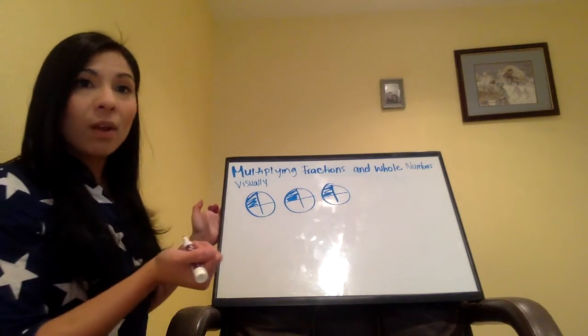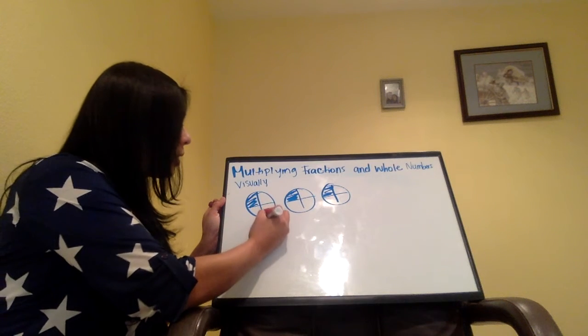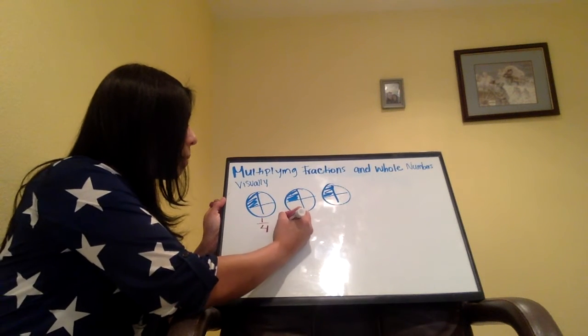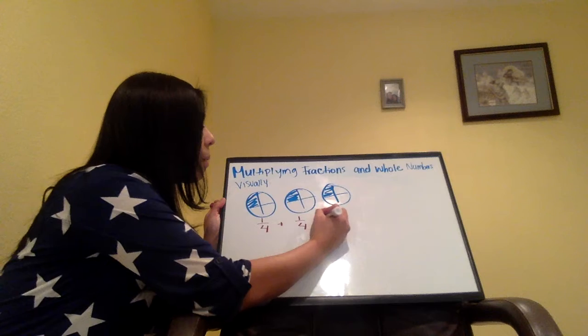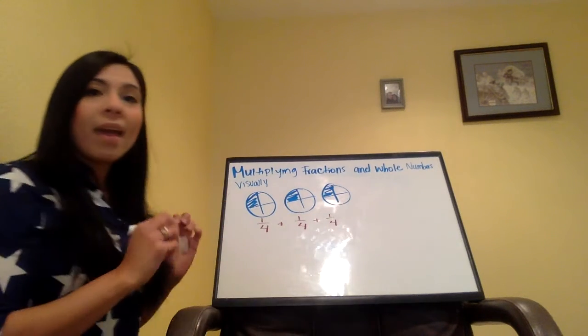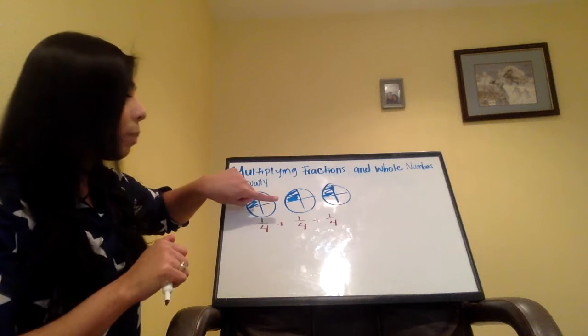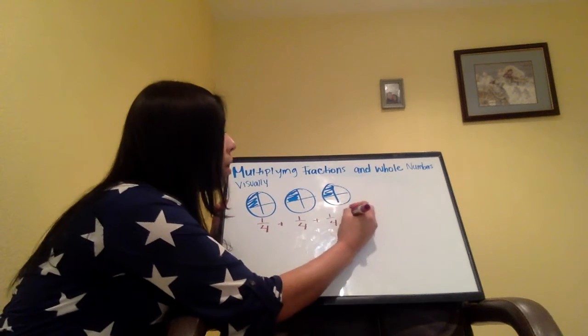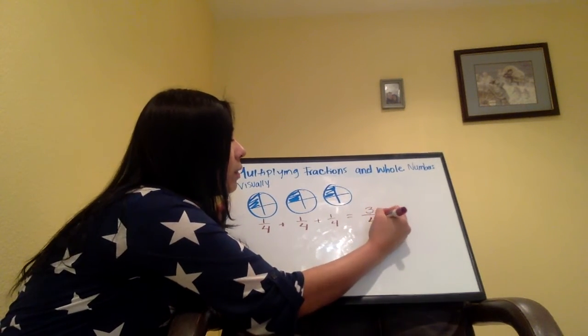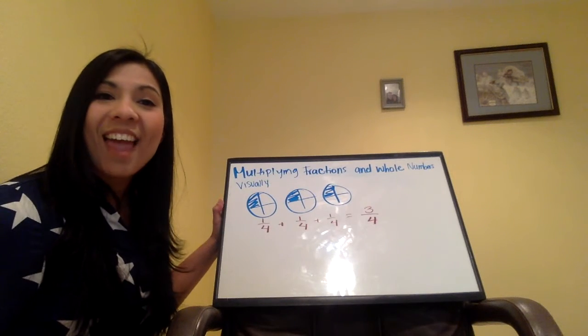So what I'm going to be doing is the following. So this is one-fourth plus one-fourth plus one-fourth. So this is one way for me to see that one-fourth plus one-fourth plus one-fourth equals three-fourths. Do you see that?